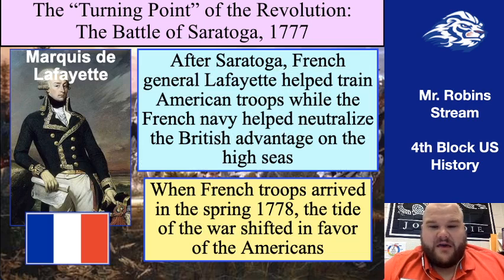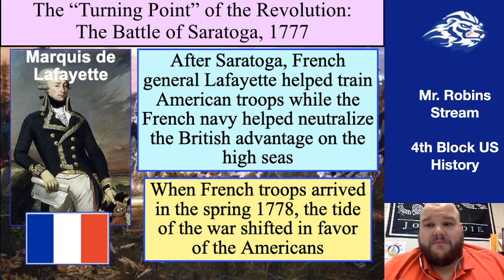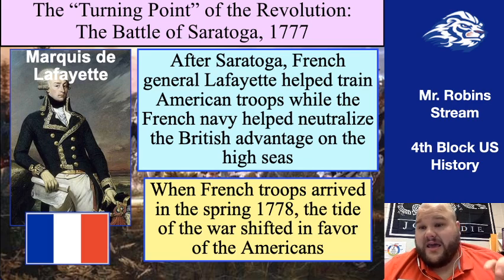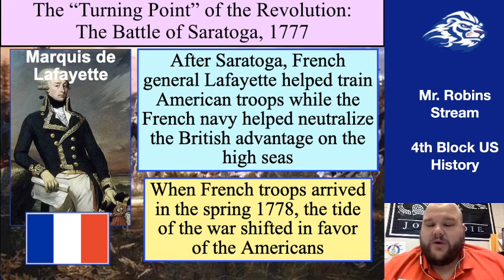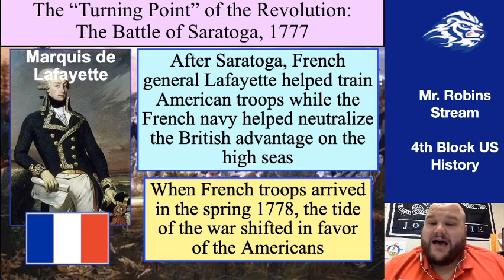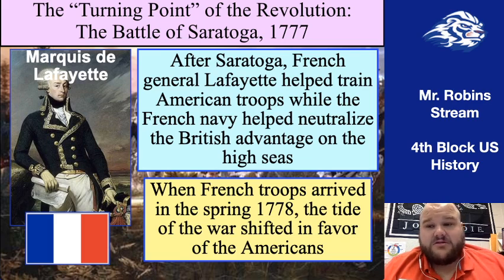One Frenchman we need to focus on is the Marquis de Lafayette. Lafayette was a big supporter of America even before the revolution occurred, and was one of the first Frenchmen pushing for French intervention. He actually came over to America early despite what the king wanted. Once France formally joined, he served as a kind of lieutenant under George Washington, helping train troops while the French Navy began fighting the British on the high seas — which started to make it easier for supplies to get into the colonies. By the time French troops actually landed in spring 1778, things were looking pretty good for the Americans.